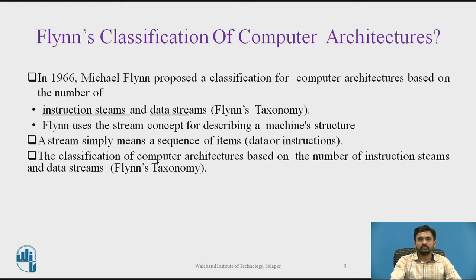Flynn's classification of computer architecture, widely used since 1966, is Flynn's Taxonomy. This taxonomy distinguishes multiprocessor computer architecture according to independent dimensions of instruction stream and data stream. An instruction stream is a sequence of instructions executed by a machine, and a data stream is a sequence of data including input, partial memory, partial data, or temporary results used by the instruction stream. Each of these dimensions can have only one of two possible states — either single or multiple.